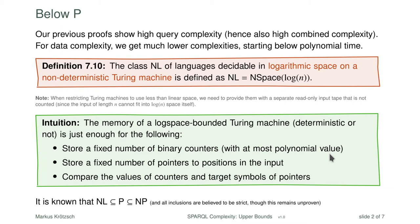You can only have a fixed number of local variables; you cannot have list data structures or stacks which grow during computation. This is obviously a very limited model, and it is known to be below P. The 'N' in NL means we can guess during computation — it's a non-deterministic type of algorithm — but even with this it is not more powerful than polynomial time. We think that NL is strictly less than P, but this hasn't been proven yet — your chance for a Turing Award.